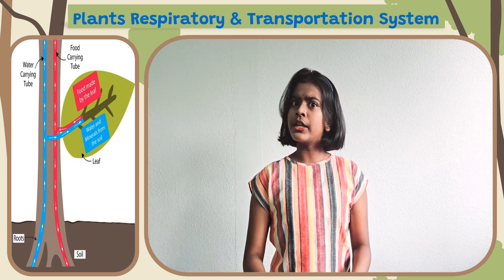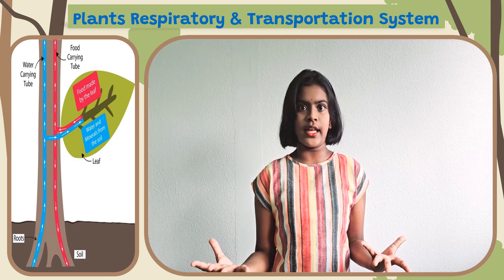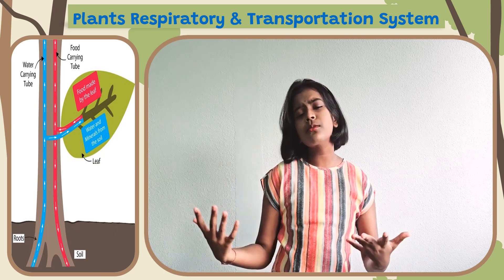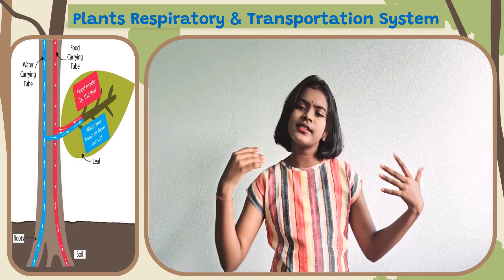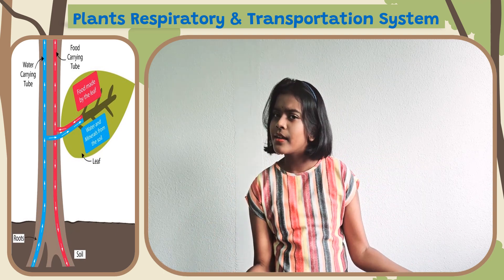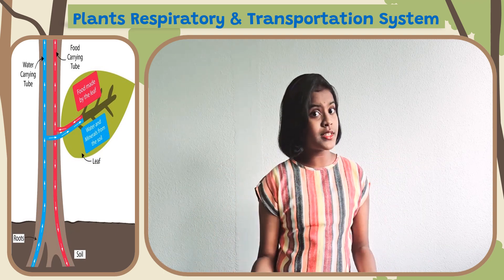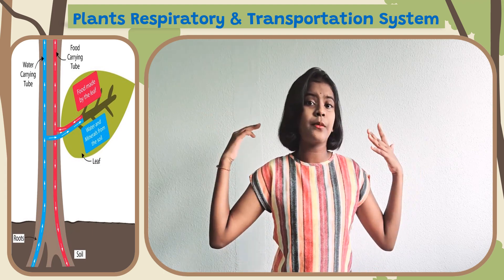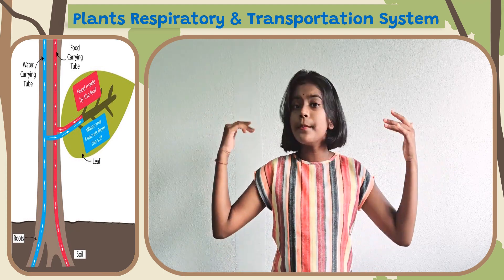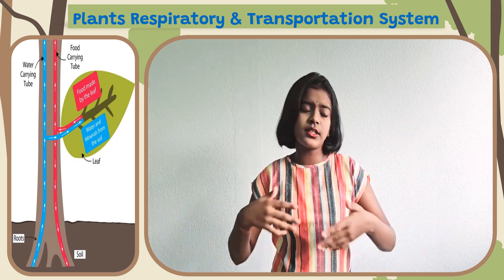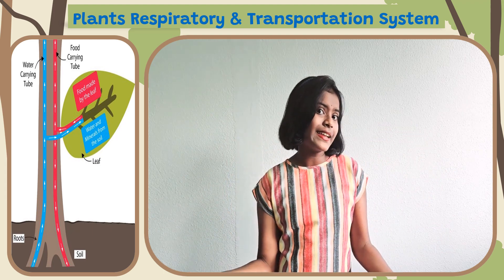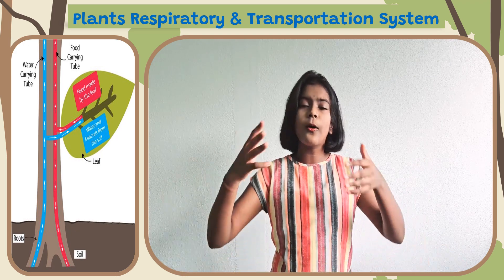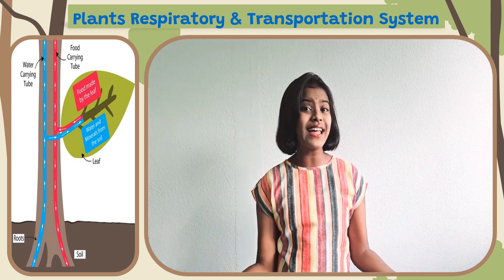But the roots don't get any food. So the roots will slowly die. When the roots die, the leaves won't get any water and minerals because the roots are dead. So soon the whole plant will die.